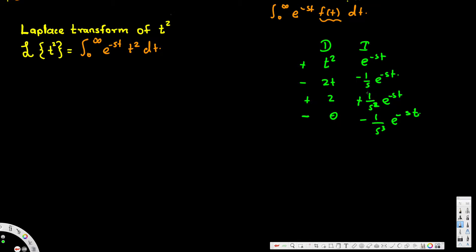Now, the last integration result should actually be positive because we are dividing by negative s, so the signs alternate: negative, positive, negative, positive. The answer is found by cross-multiplying each row — multiplying the derivative term by the corresponding integral term.